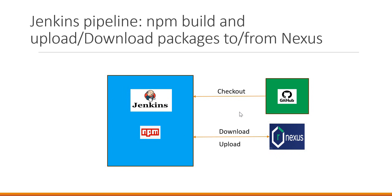This project is described in this diagram. We will save our source code in the GitHub project. As part of the pipeline, it will check out the source code and perform the npm build. During the build, if it depends on any npm packages, those will be downloaded from the Nexus repository, and the generated packages will be uploaded to the Nexus repository.